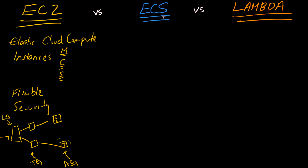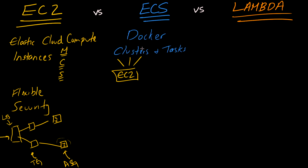ECS stands for Elastic Container Service, and it's useful for those already embedded in the Docker ecosystem. In the ECS model, you operate on clusters and tasks. A cluster is just a set of EC2 machines, so you're still managing infrastructure with the default configuration. The mental model for ECS is that you treat a pool of EC2 instances as abstract resources and deploy tasks to those clusters. Tasks can either be long-lived — like hosting an application receiving traffic — or one-off batch processing jobs that might run 20 to 30 minutes or even up to an hour.